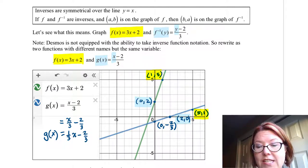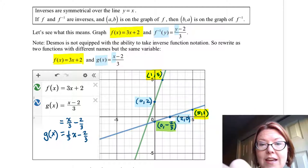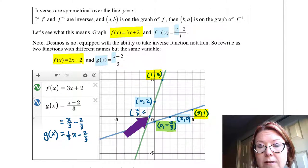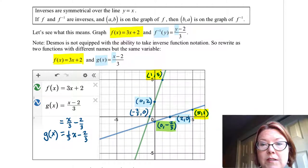And we have a point on g at (0, -2/3), and sure enough, if you look at the graph of f, you'll see a point at (-2/3, 0). So there's another corresponding point.